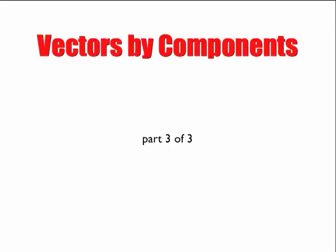Adding vectors by components, part 3 of 3. In part 1 we explained how to deconstruct and construct a vector. In part 2 we talked about how we can add vectors by components on a grid just by counting out the blocks. Now we're going to look at how to do it when you don't have a grid, which is closer to what we're really doing most of the time.